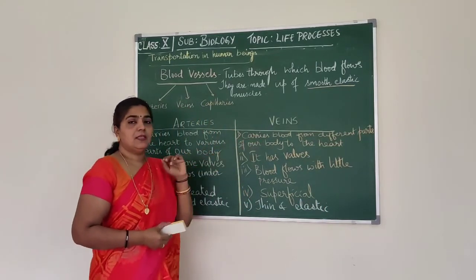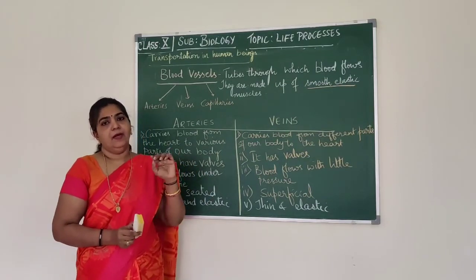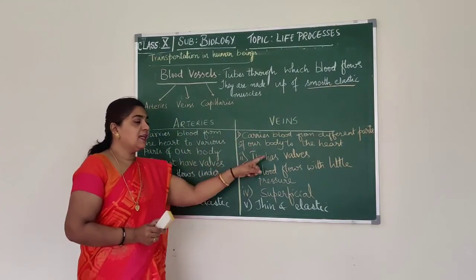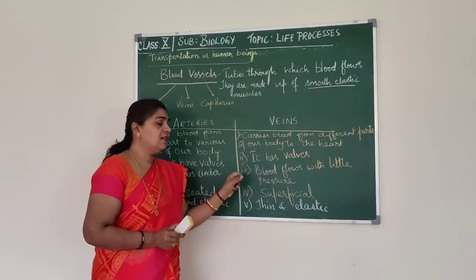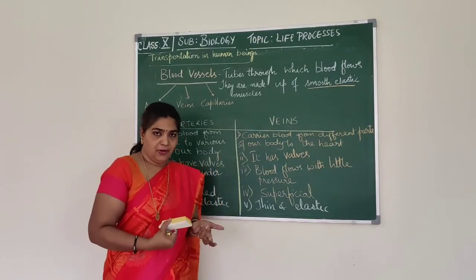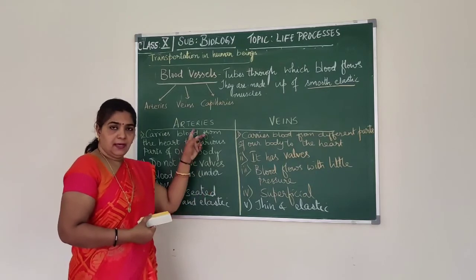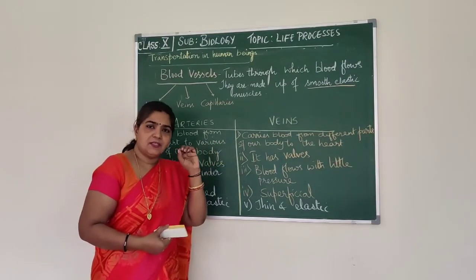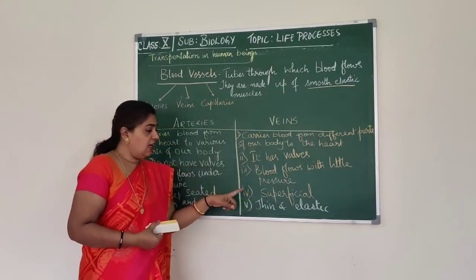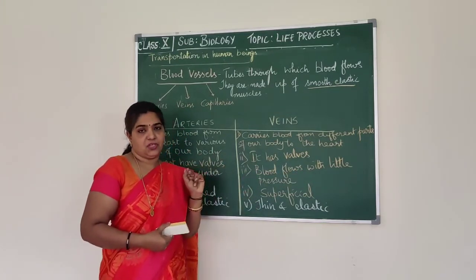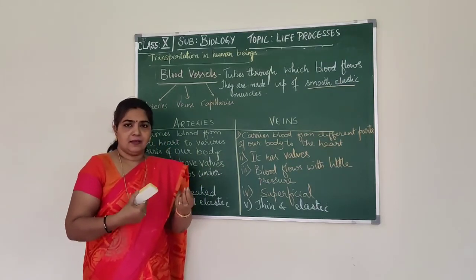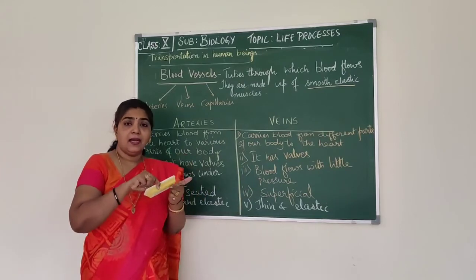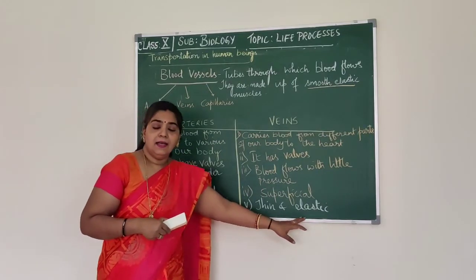Veins always carry blood from various parts of the body to the heart. Veins have valves, and the blood flows with little — almost no — pressure compared to arteries. Veins are located superficially. When you cut your finger with a blade, what actually gets cut is a vein because it is located superficially. Veins are thin and elastic.